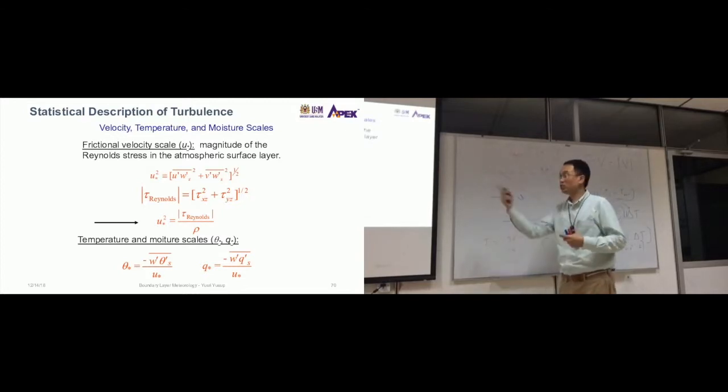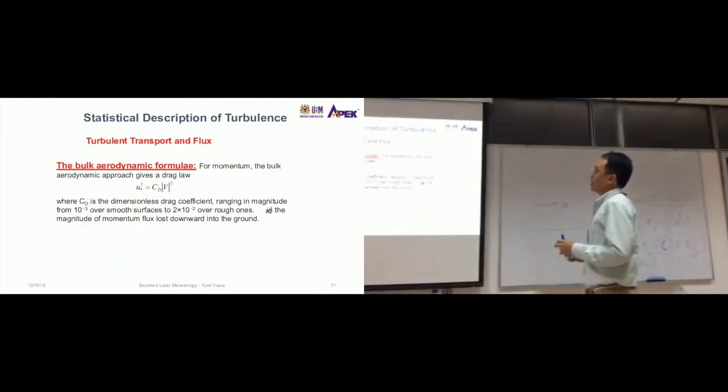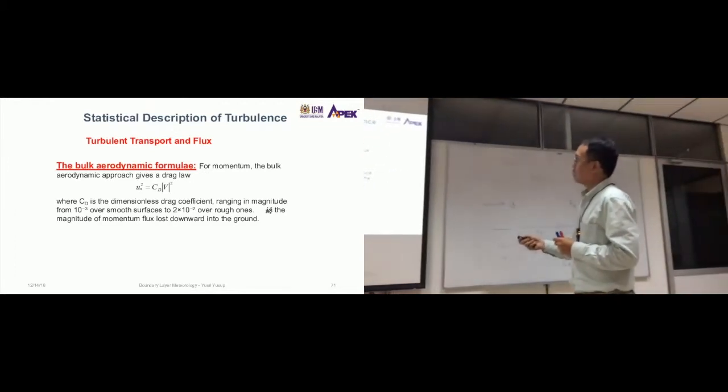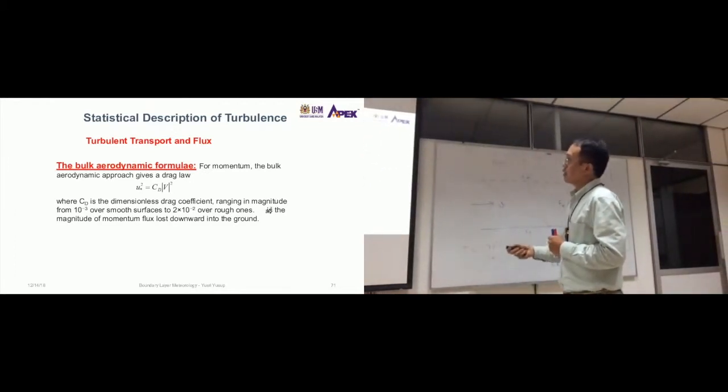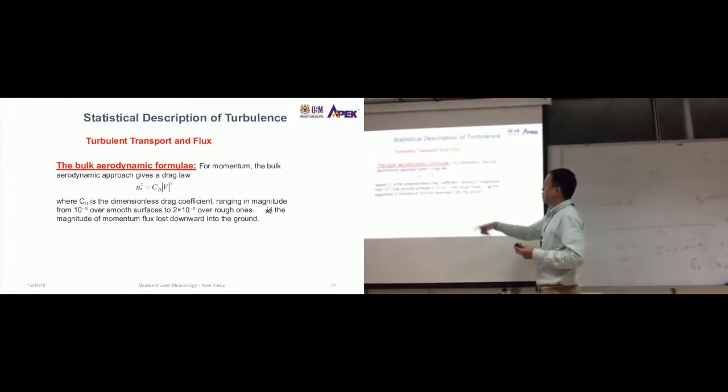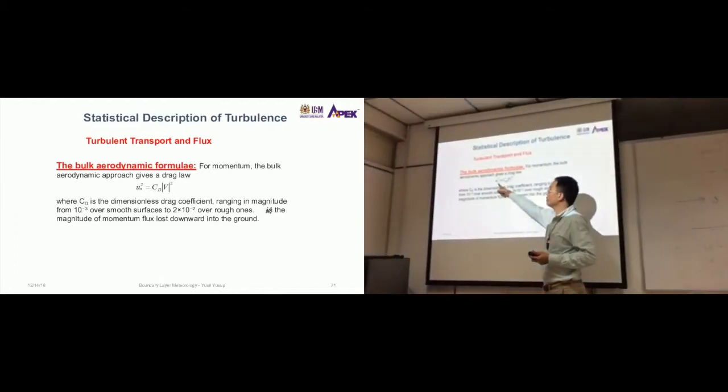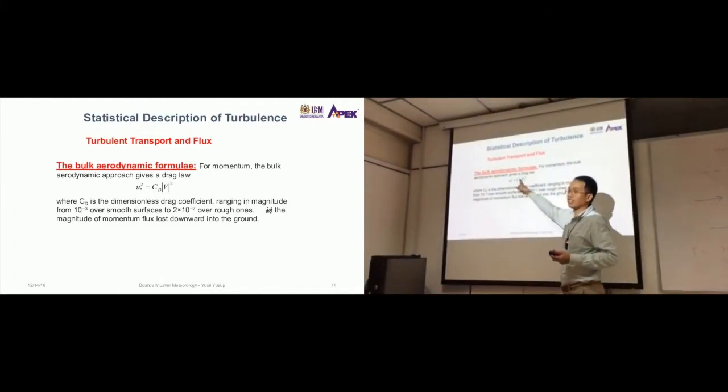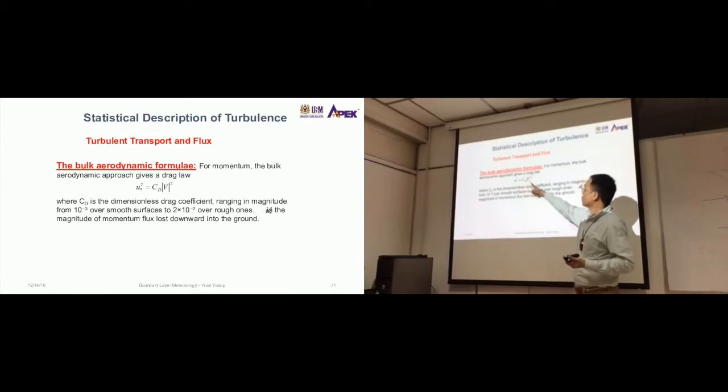Now the bulk aerodynamic formula for momentum. The bulk aerodynamic approach gives us a drag law—the drag in the air. It's very simple. Remember the u* just now? It equals a coefficient, a constant, multiplied by the mean wind speed squared.